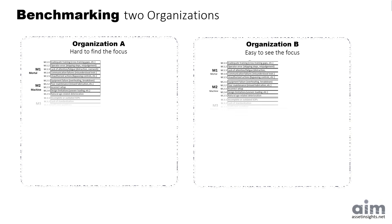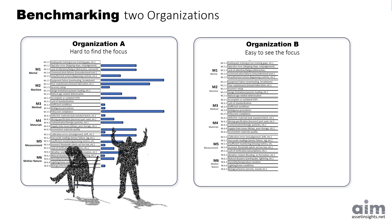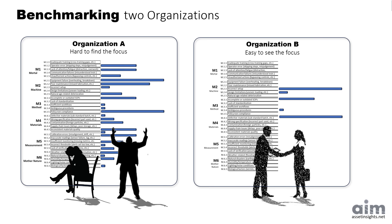On the left, we have Organization A — a complex environment with dozens of failure modes competing for attention. Everything looks important and the team feels overwhelmed. They need Pareto analysis to cut through the noise and find the few that matter most. But on the right, Organization B lives in a simpler world; they don't need to hunt for the vital few because the causes are already obvious. The takeaway? Pareto isn't for every problem — it's for when the noise drowns out the signal.